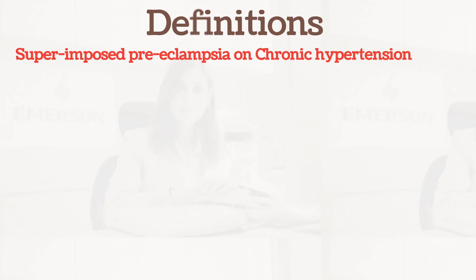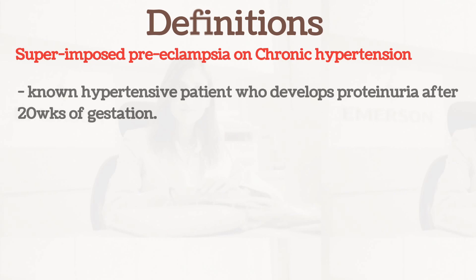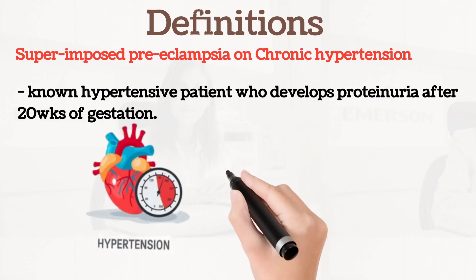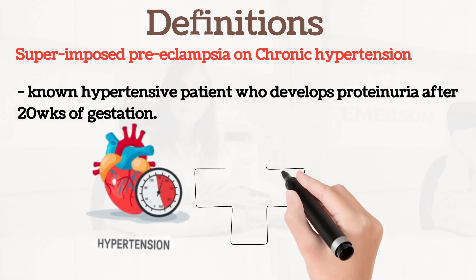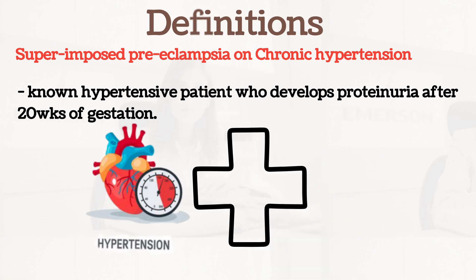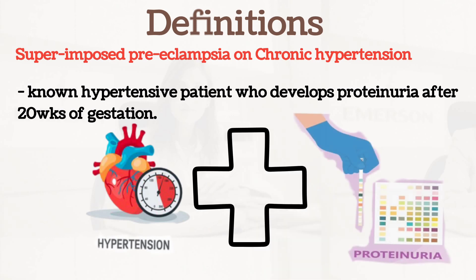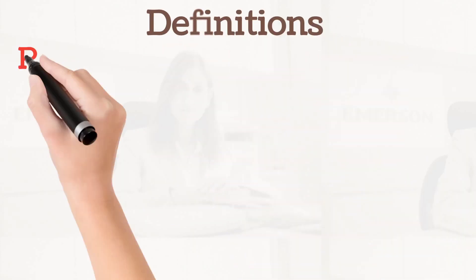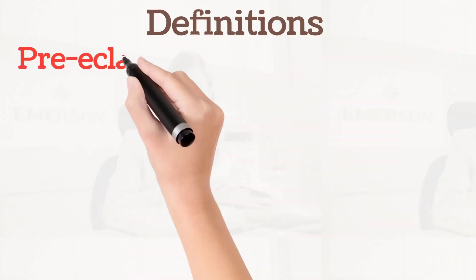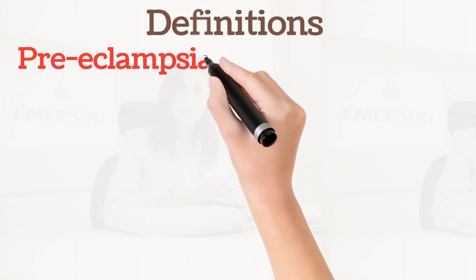Superimposed pre-eclampsia and chronic hypertension is defined as a hypertensive patient who develops proteinuria after 20 weeks of gestation — so hypertension plus proteinuria. That's the definition for this one.